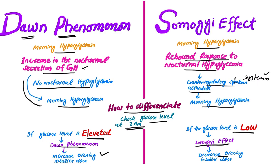This is very important to differentiate between these two. If glucose level is elevated at 3 a.m., it is Dawn Phenomenon — increase the evening insulin dose. If glucose level is low at 3 a.m., it is due to the rebound response to nocturnal hypoglycemia — the Somogyi Effect — so decrease the evening insulin dose.